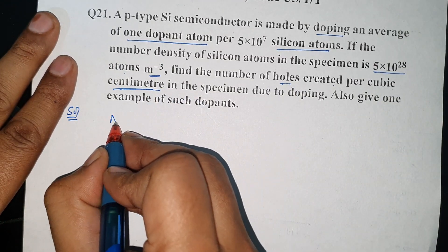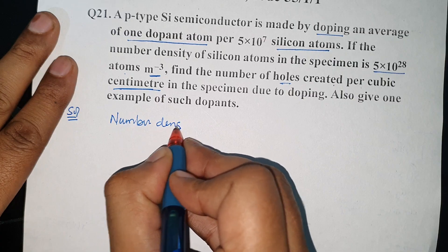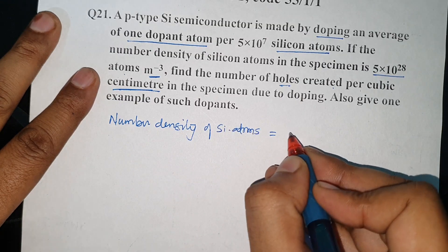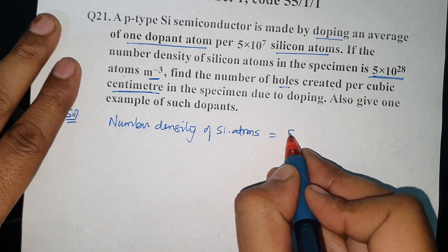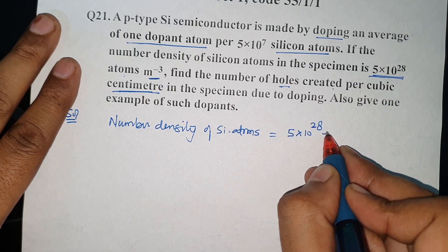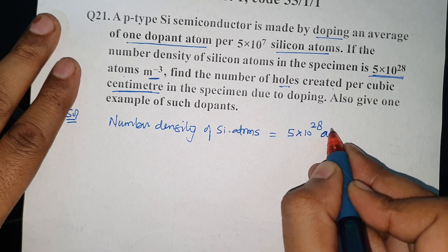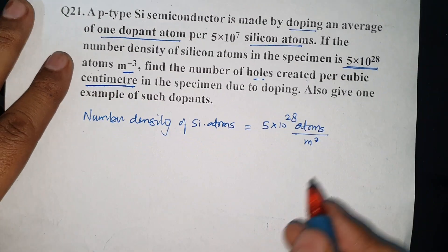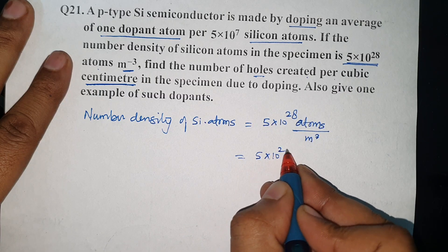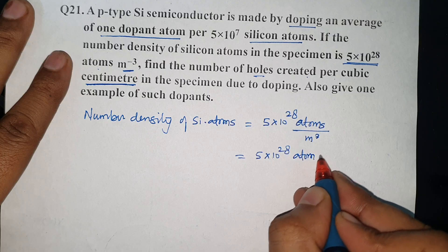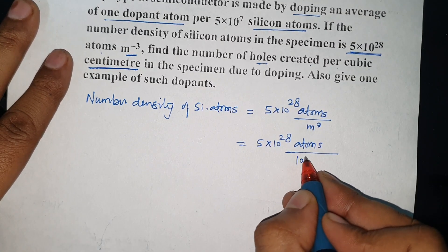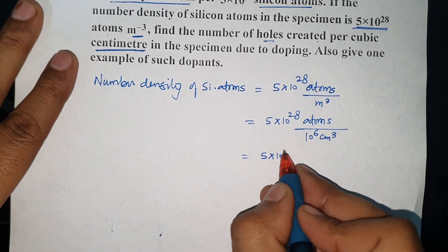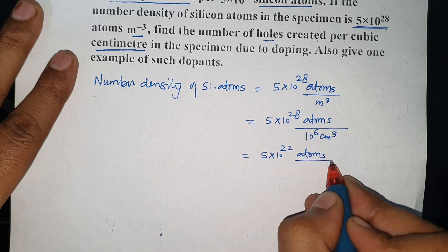We have the question given here, so we will write down the number density of silicon atoms. The number density of silicon atoms is 5×10²⁸ silicon atoms per meter cube. Since we need per cubic centimeter, we convert: 1 meter = 100 cm, so 1 m³ = 10⁶ cm³. Therefore, the number density becomes 5×10²² silicon atoms per cubic centimeter.